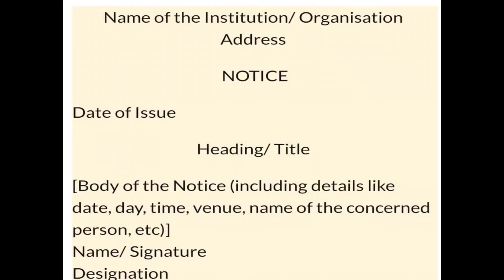On the screen you can see the format of writing a notice. At the first place you have to write down the name of the institution or the organization. In the second line you have to write the word NOTICE — N-O-T-I-C-E — and you must remember that this word will always be written in capital letters. Then the date of issuing the notice goes here, in the left-hand corner of the third or fourth line. After leaving one line blank, you give a title or heading. This content area is also known as the body of the notice.